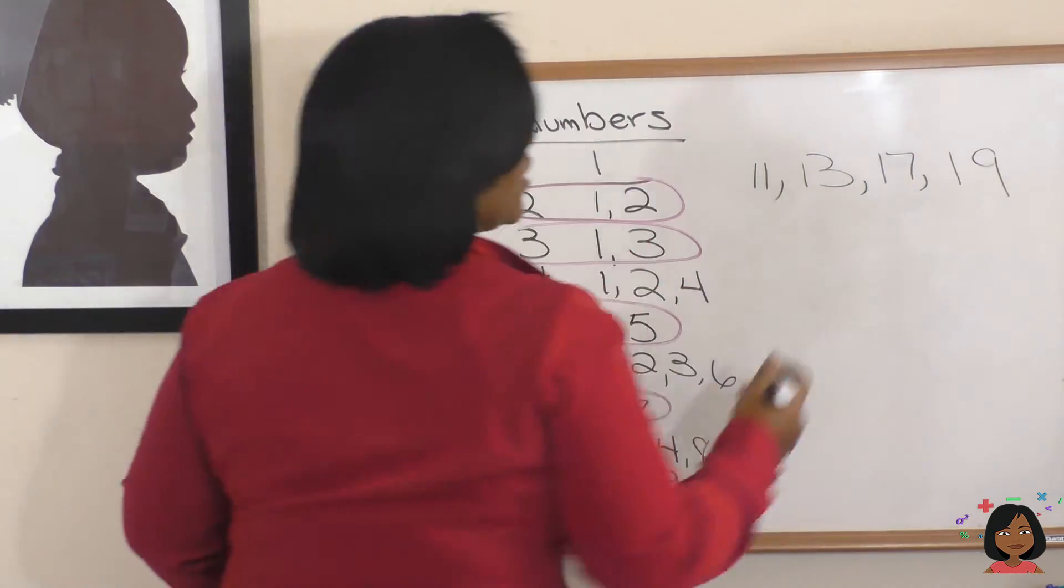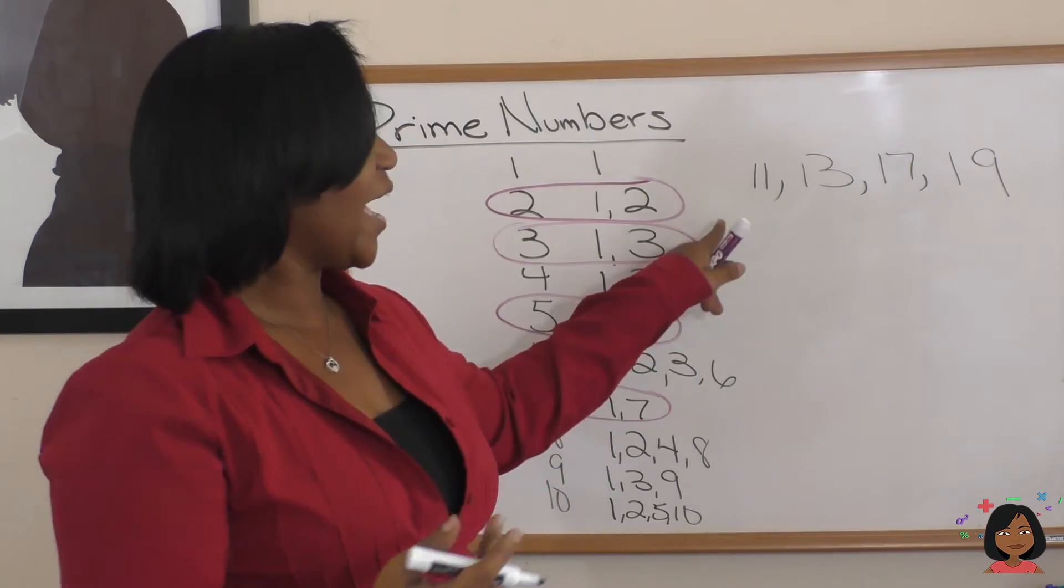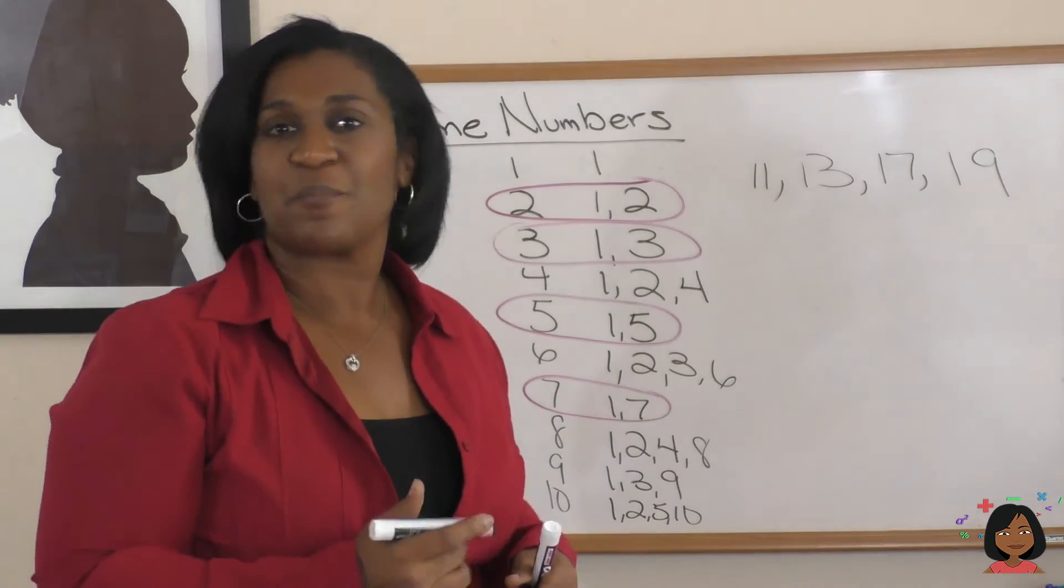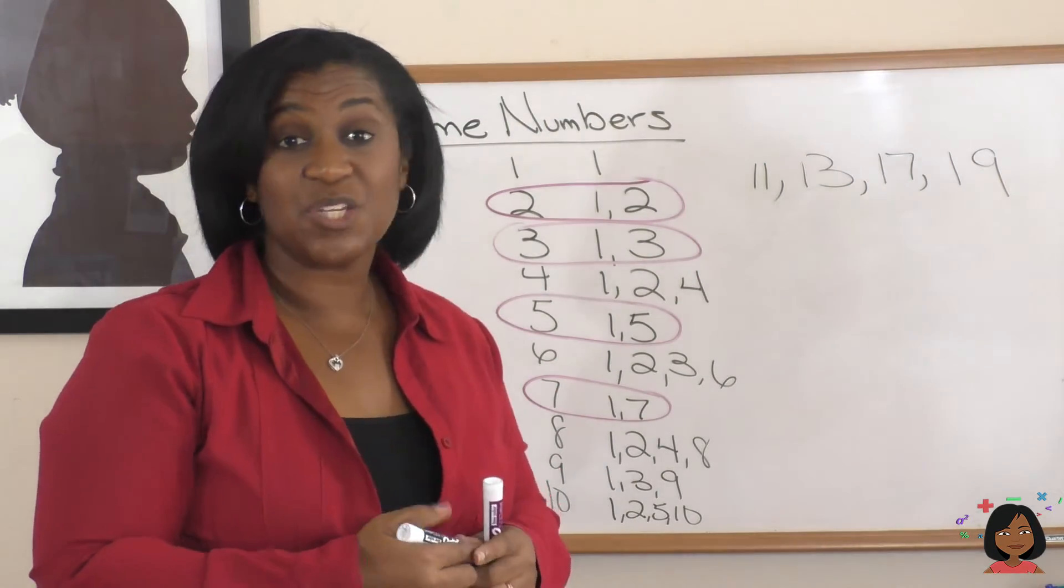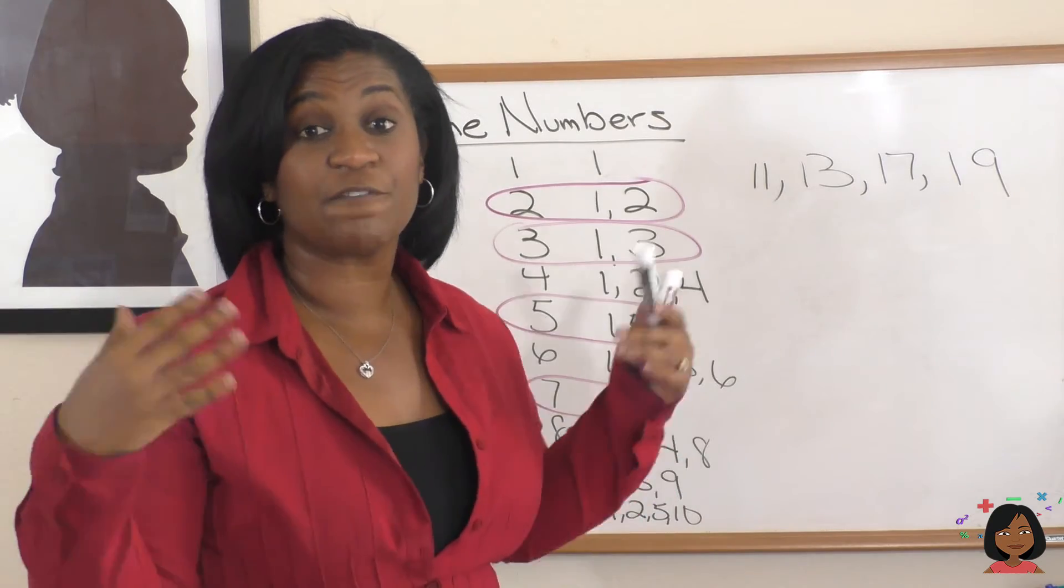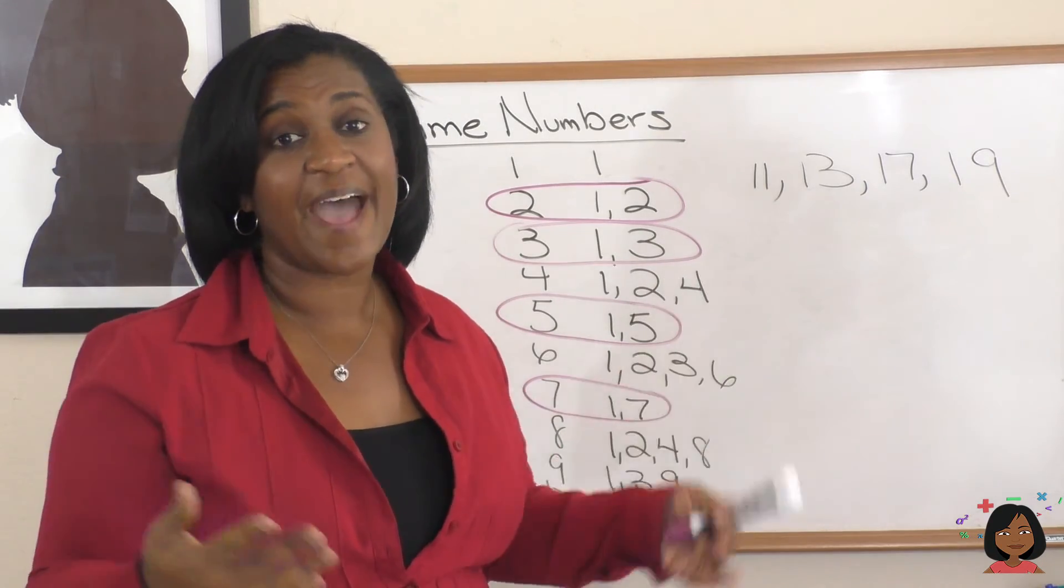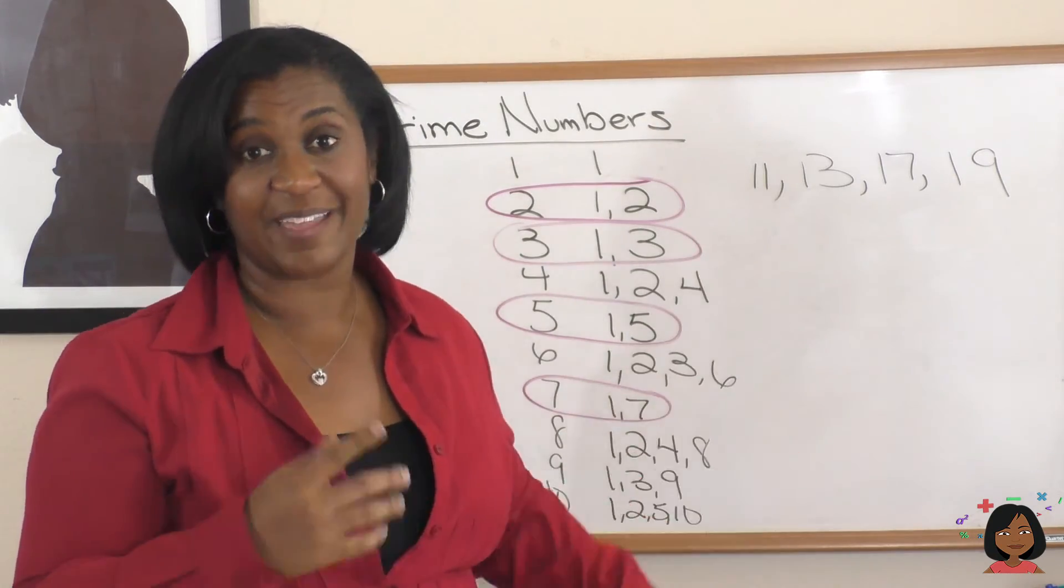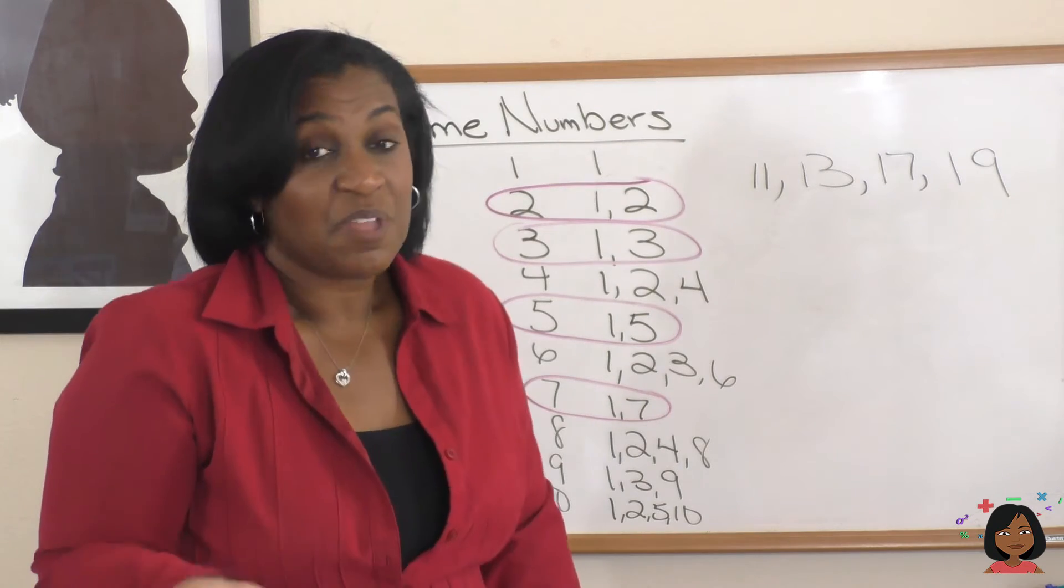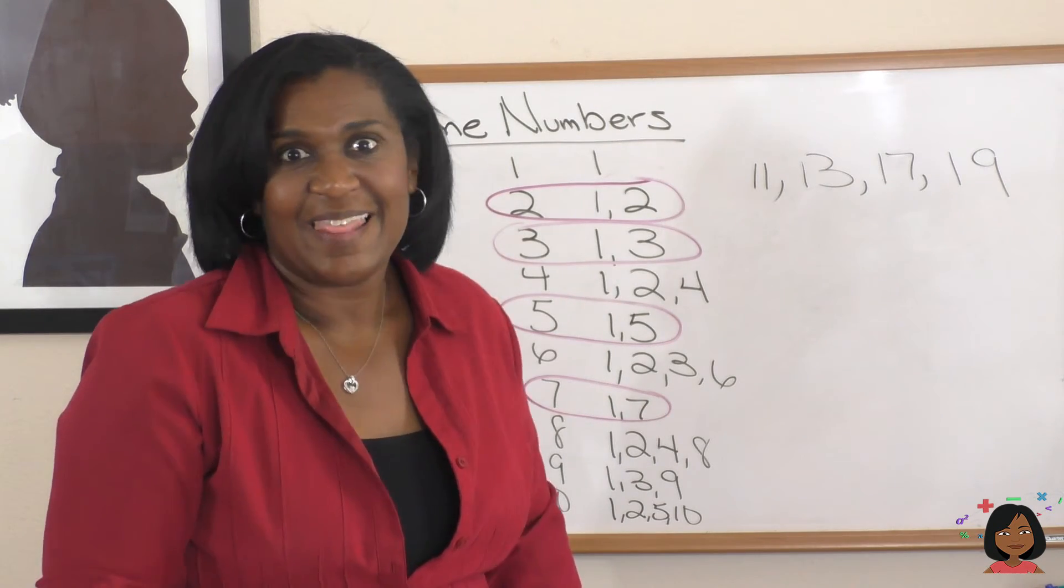So, between the numbers 11 and 20, we have another 4 prime numbers. We could continue on and on like this, just looking for numbers that only have 2 factors each. Again, that is the definition of a prime number.